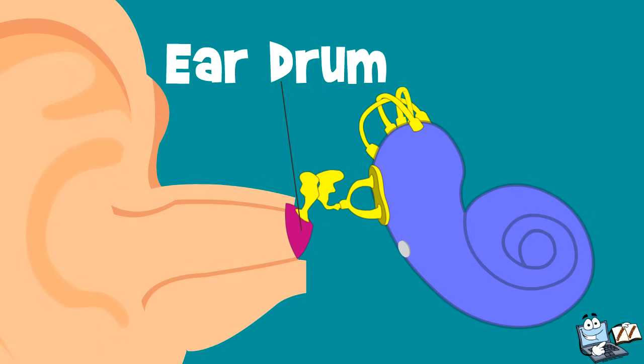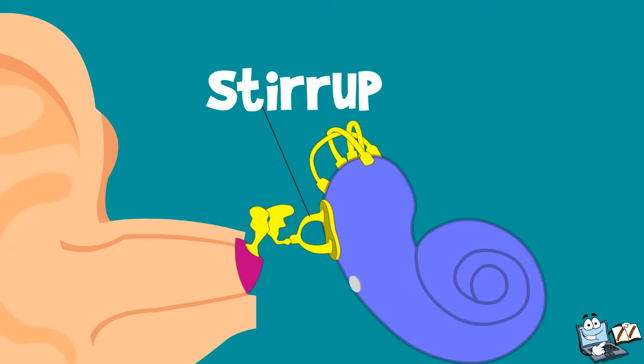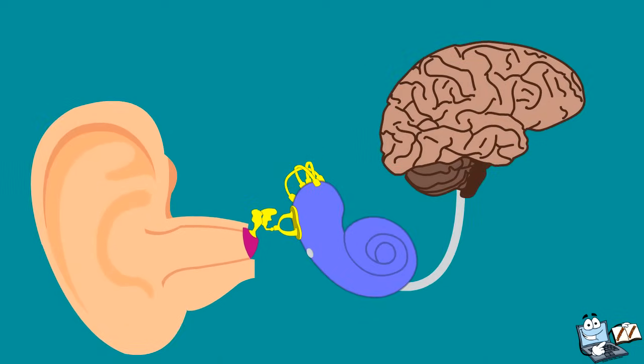There are three small bones: the anvil, hammer, and stirrup. Together, it passes vibrations to cochlea, a spiral-shaped fluid filled in the ear. It is lined with cilia, which moves when it vibrates. This vibration creates nerve impulses. And thus, we hear sounds.